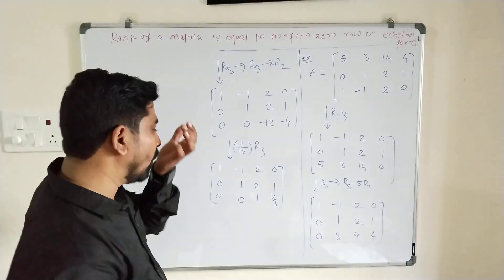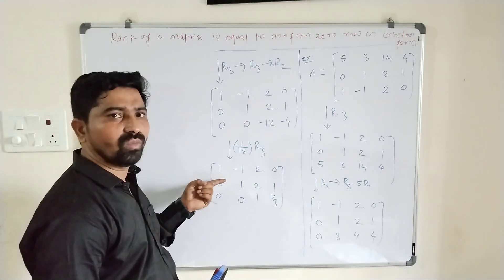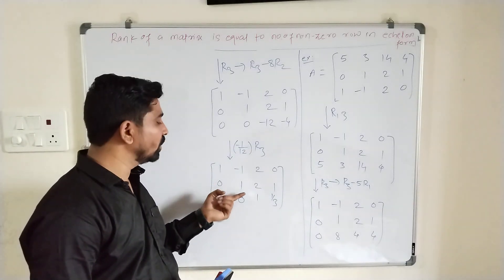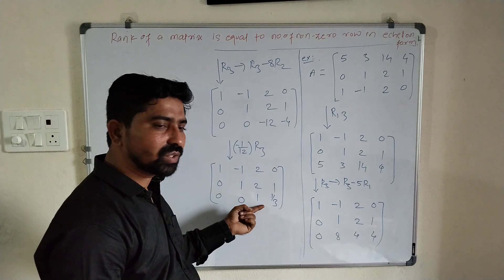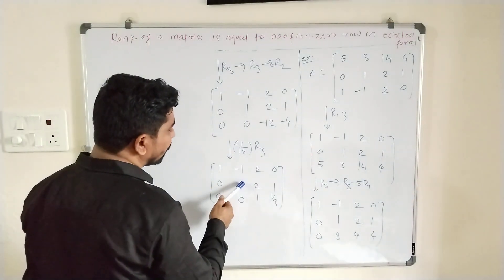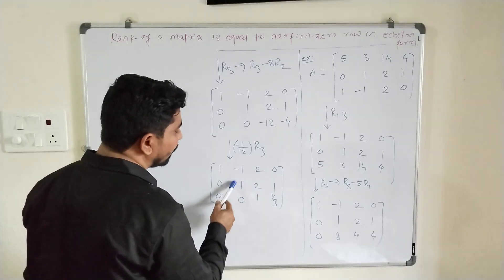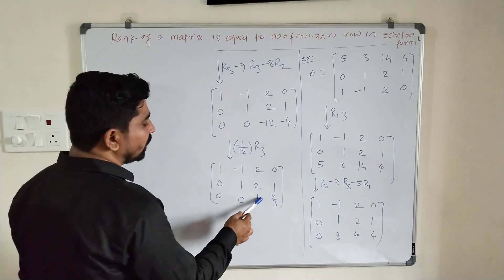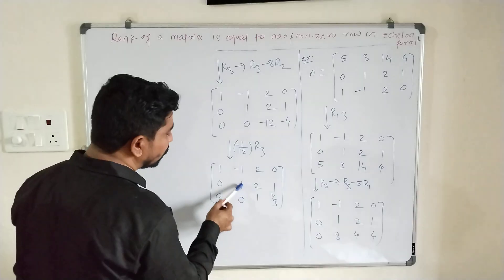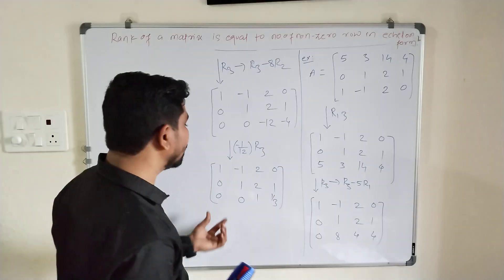Now, is this matrix in Echelon form? Yes, this matrix is in Echelon form. The first non-zero entry from the left in R1 is 1 (leading element). In R2, the first non-zero entry from the left is also 1. In R3, the first non-zero entry from the left is also 1. Checking Property 3: the leading element of R2 occurs to the right of the leading element of R1, and the leading element of R3 occurs to the right of the leading element of R2. So this matrix satisfies all three properties and is in Echelon form.